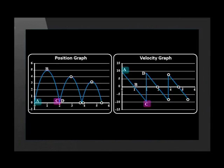Is the object traveling just as fast at A as at C? Yes, the magnitudes of these two velocities are equal — they are both approximately 10 meters per second. The velocities have different directions though. The ball has a velocity of positive 10 meters per second at A, in other words 10 meters per second upward. It has a velocity of negative 10 meters per second at C, in other words 10 meters per second downward.